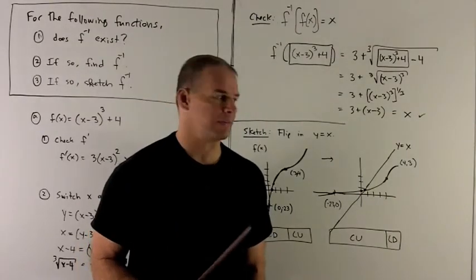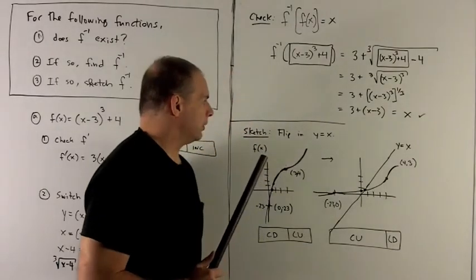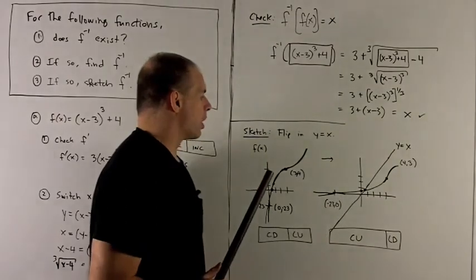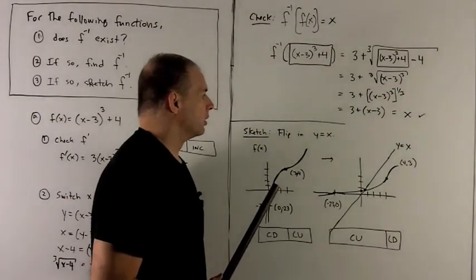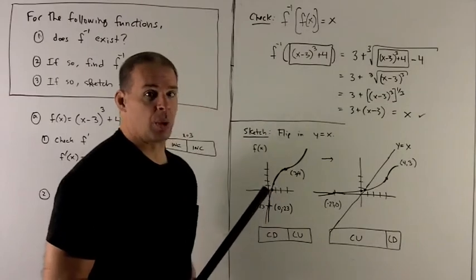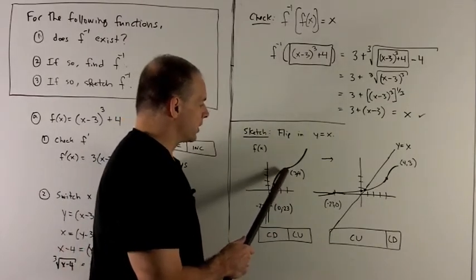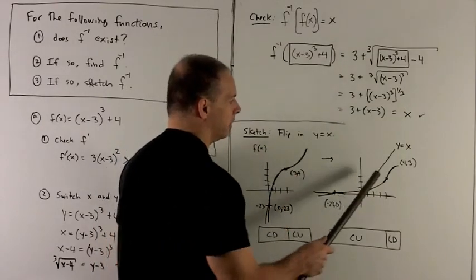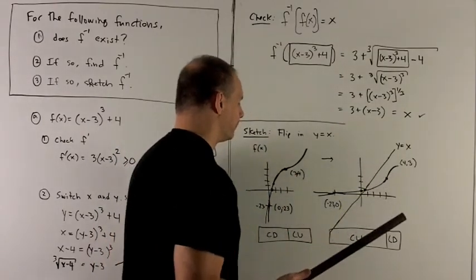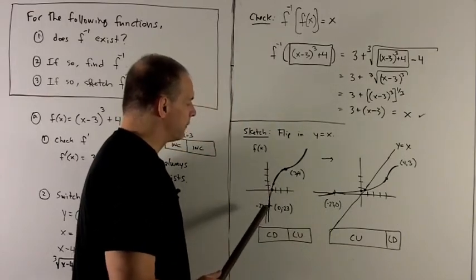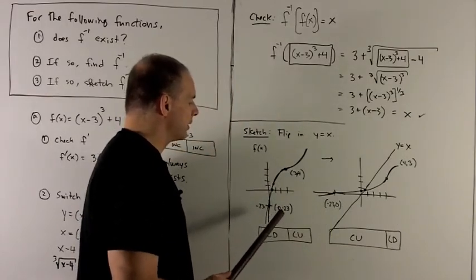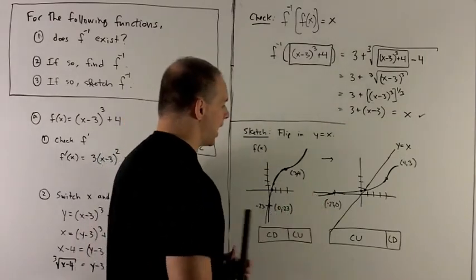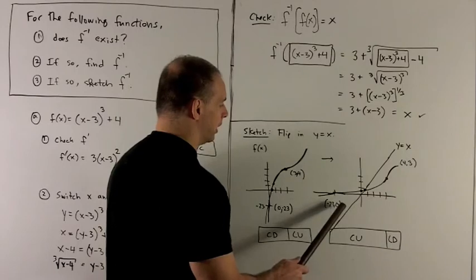So now all I have to do is sketch the function. How do we do that? Well, we're going to take the line y equal to x, and then just flip our original graph in that line. All we're doing is switching x and y. So think of it this way. Our critical point was at the point (3, 4). So if I switch x and y, that's going to go to the point (4, 3). Another point I have on here for free is the intercept. If I put zero into the function, I get 0 minus 23. When I flip in the line y equals x, that's going to give me (-23, 0).